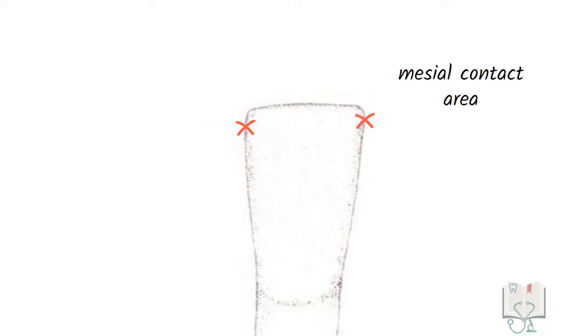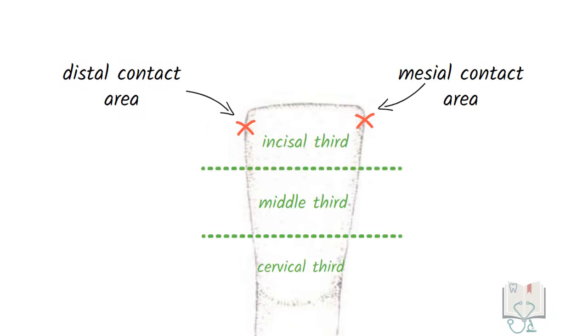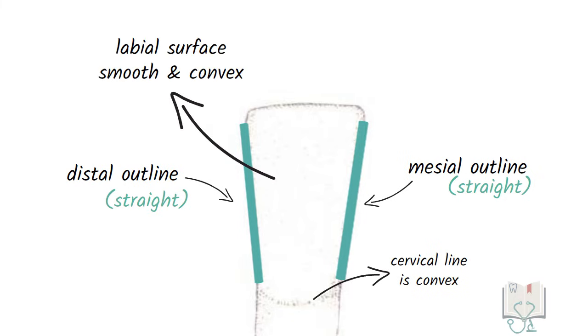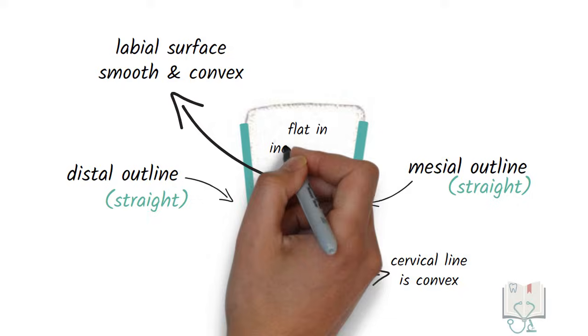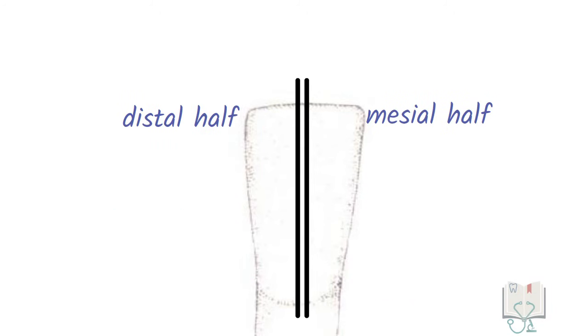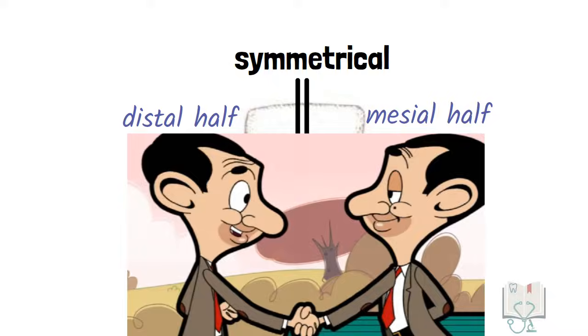Both contact areas, the mesial contact area and distal contact area, are in the incisal third. Both outlines, mesial outline and distal outline, are almost straight and the cervical line is convex towards the root. The labial surface is smooth and convex with slight flattening in the incisal third. So we see that the crown's mesial half and distal half are almost symmetrical.